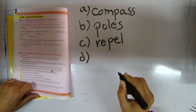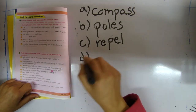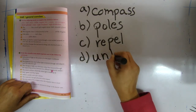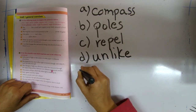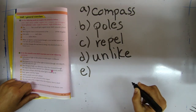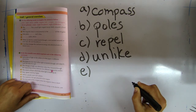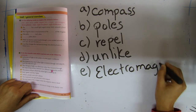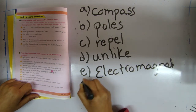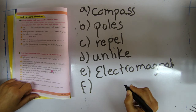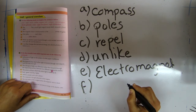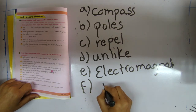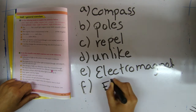Number four: unlike poles attract each other. Number five: when an electric current travels through a wire twisted around an iron nail, the nail becomes a temporary magnet, or in other words, an electromagnet. Number six: the device that changes mechanical energy into electric energy is known as a dynamo, in other words, an electric generator.